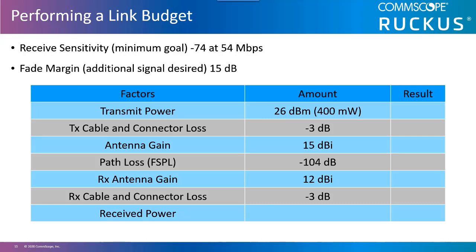Performing a link budget. Here you can see a sample of the information needed in calculating a link budget. We have defined our minimal goal for this bridge link and factored in a negative 15 dB fade margin as we begin with a transmit power of 26 dBm. Once we introduce the transmit cable and connector losses, we would then be at 23 dBm. The transmit antenna adds 15 dBi gain, taking us to 38 dBm. Free space path loss, being our largest loss in every communication, is at minus 104 dBm, which takes us to negative 66 dBm.